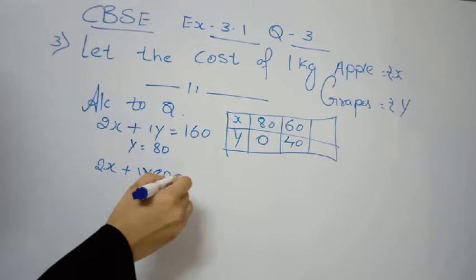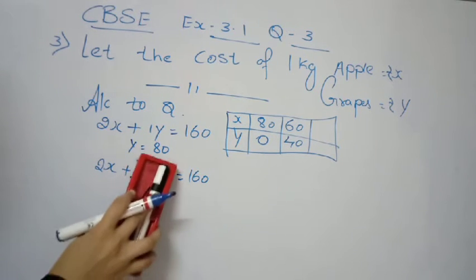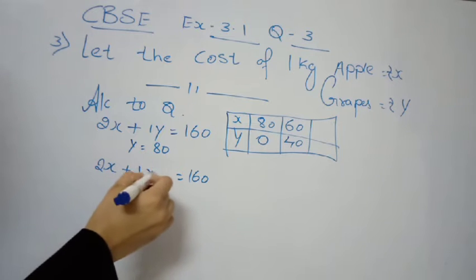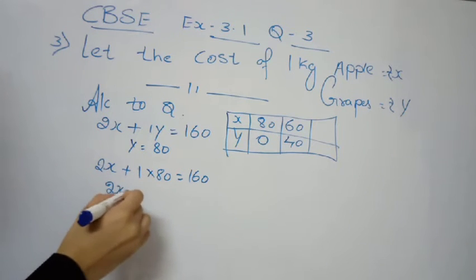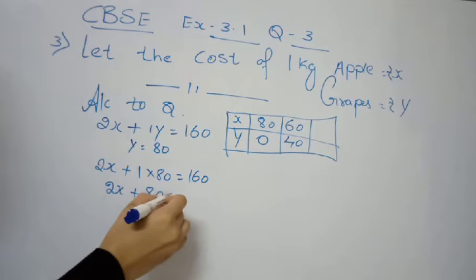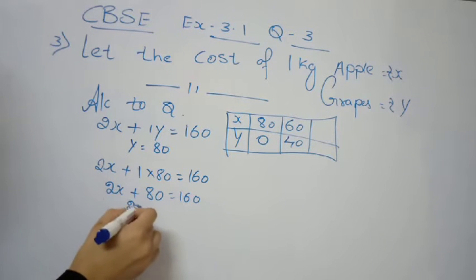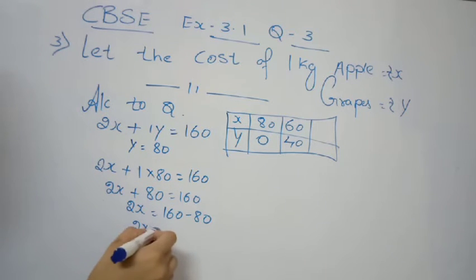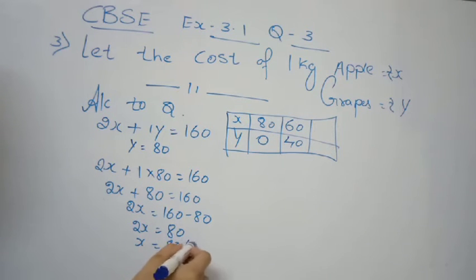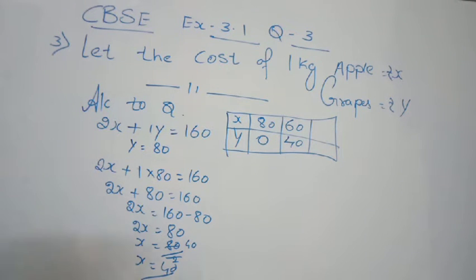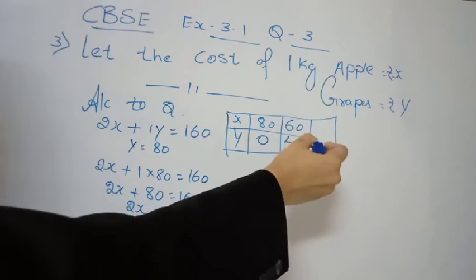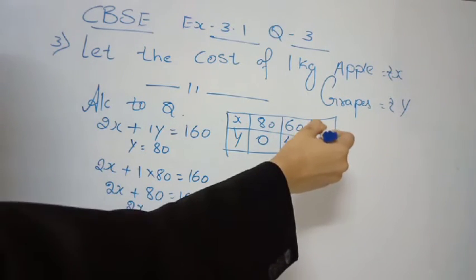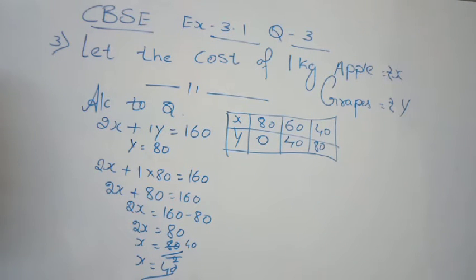Now substituting y value 80 into the equation: 2x plus 1 into 80 equals 160. So 2x plus 80 equals 160, giving 2x equals 80, and x equals 80 divided by 2, which equals 40 rupees. So when y is 80, x value is 40. This completes the first condition table.